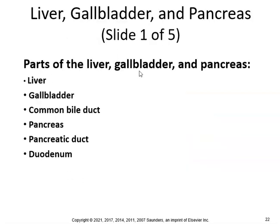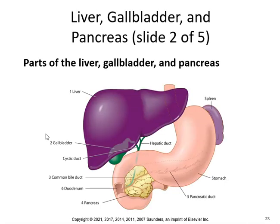The parts of the liver, gallbladder, and pancreas: you have the liver, gallbladder, a common bile duct, a pancreas, a pancreatic duct, and the duodenum. The gallbladder is embedded in the liver. You have a cystic duct and a hepatic duct that form the common bile duct, which connects to the duodenum and the pancreas.